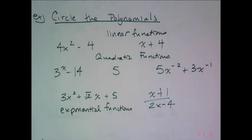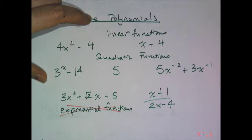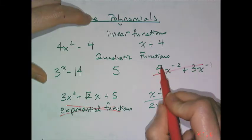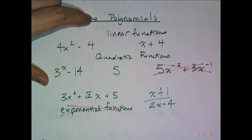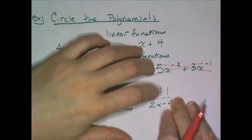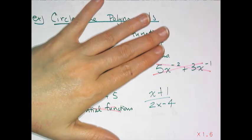So for this example, we are going to circle things that are polynomials and x out things that are not polynomials. So first and foremost, let's cross off things that are not polynomials. Exponential functions are not polynomial functions. I see something that has negative exponents, so therefore that is not a polynomial. And then if I look at this one, x plus 1 is a polynomial, 2x minus 4 is a polynomial,